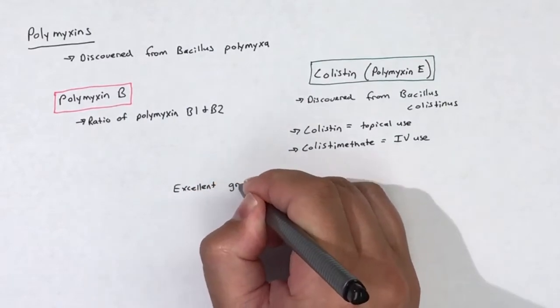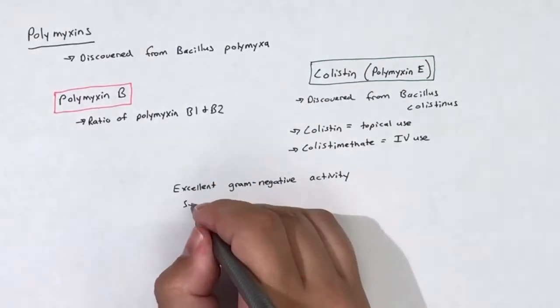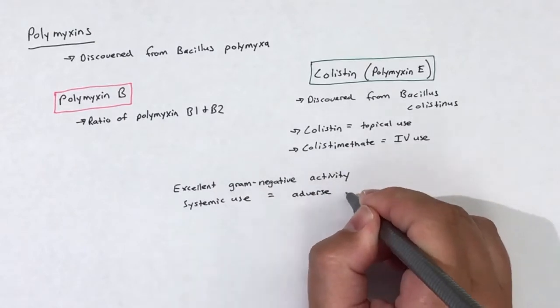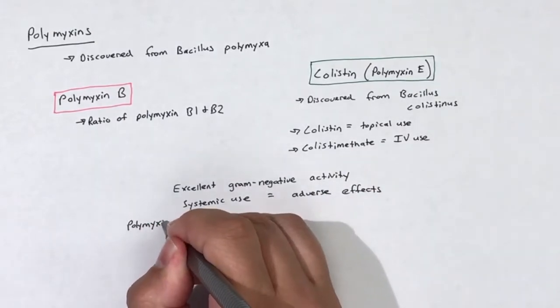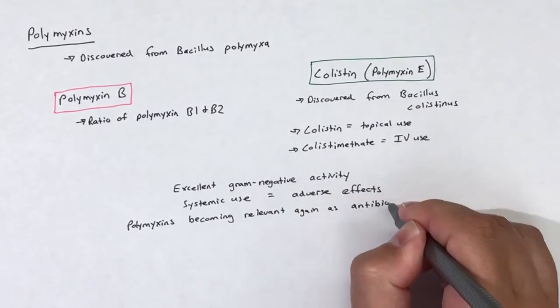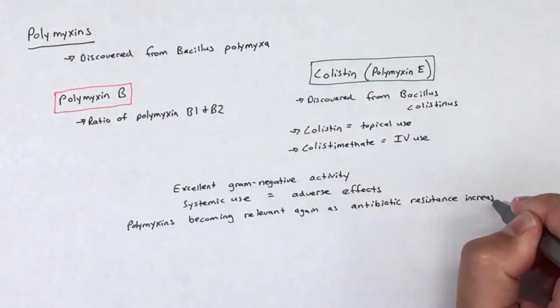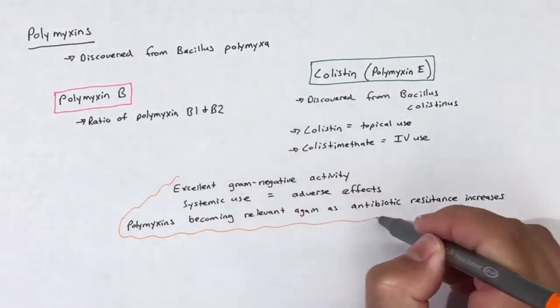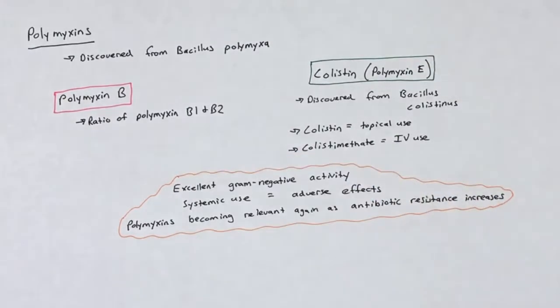Polymyxins were initially developed 50 years ago for their excellent gram negative activity. However, they began to not be used as often as their systemic use had many adverse effects. As recent antibiotic resistance increases in gram negative bacteria, polymyxins have begun to be utilized again clinically to combat the resistant bacteria.